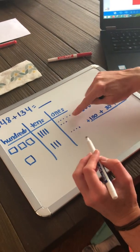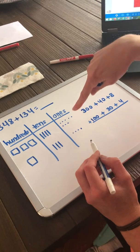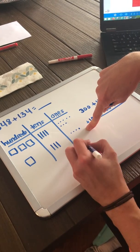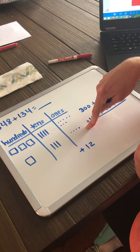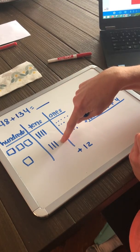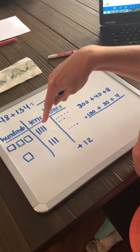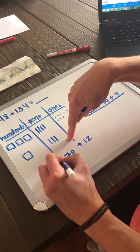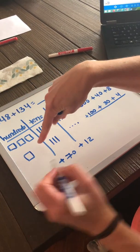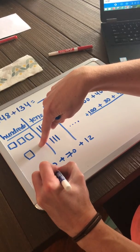So let's combine our like values. I've got 8 1s plus 4 1s, which is 12 1s. 4 10s plus 3 10s, which is 7 10s, which is 70. 10, 20, 30, 40, 50, 60, 70. And I've got 300 plus 100, which is 400.